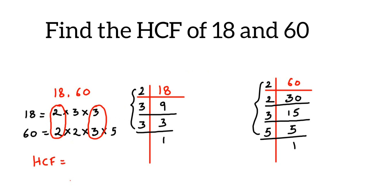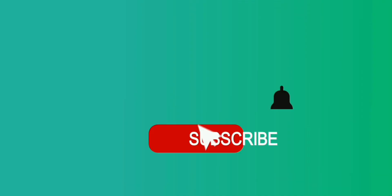If there's no pair, don't pair up — leave it. So the HCF of 18 and 60: from each common prime factor pair you take one. From this pair I'll take one 2, and from this pair I'll take one 3. So 2 times 3 is 6 — the HCF of 18 and 60 is 6.